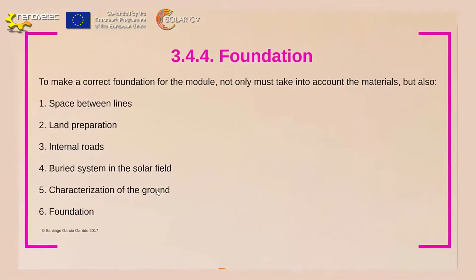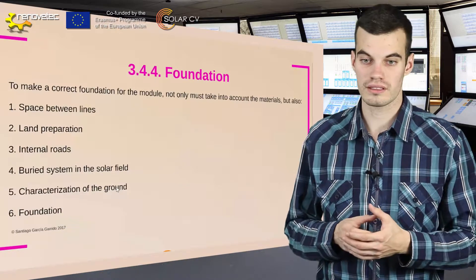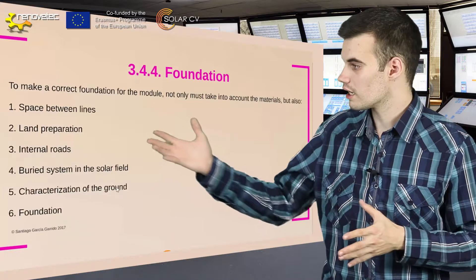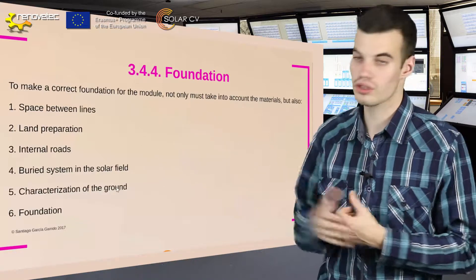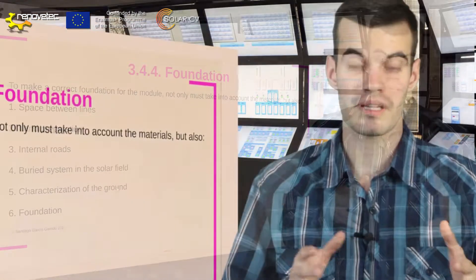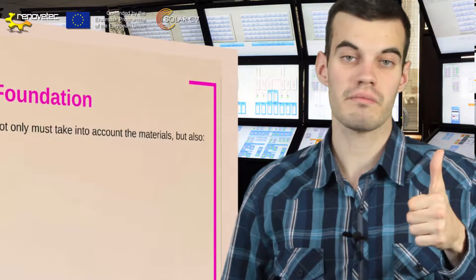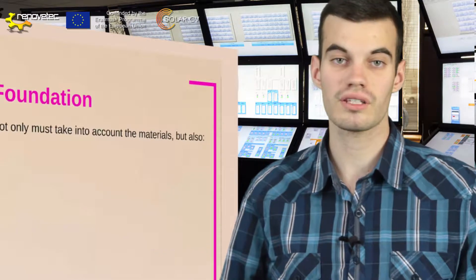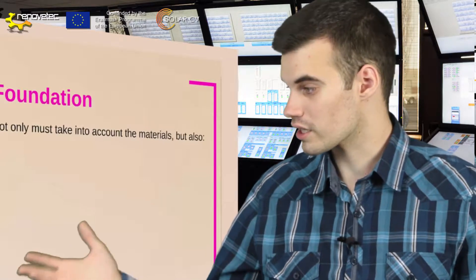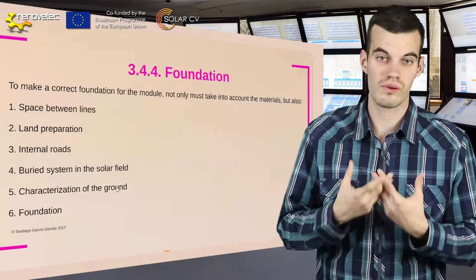Now we must define what is the foundation. The foundation is the surface where the solar field is going to be located. To make a correct foundation for the module, not only we must take into account the materials, but also the space between lines, the land preparation, internal roads, drainage system, characterization of the ground, and finally the foundation process.